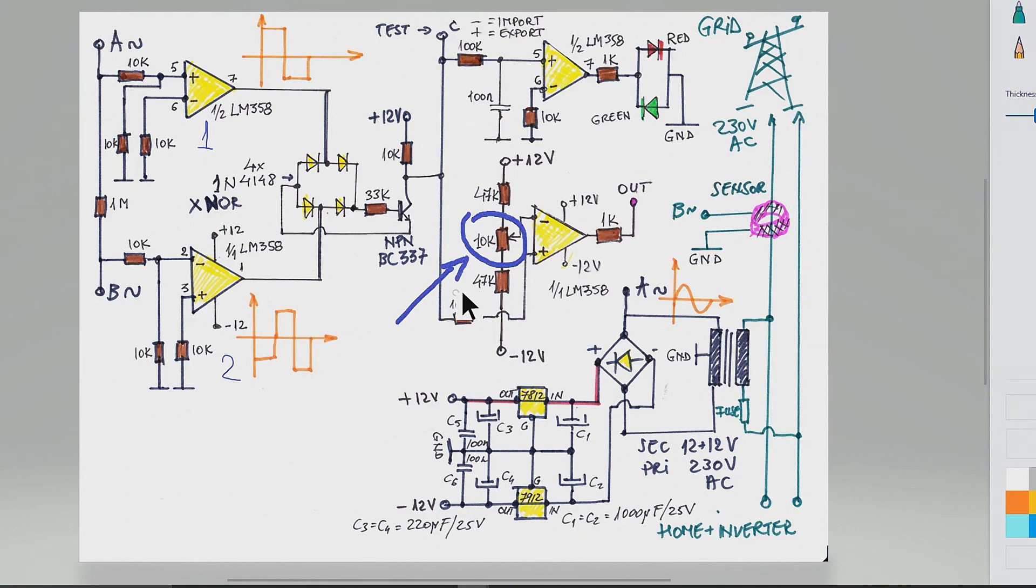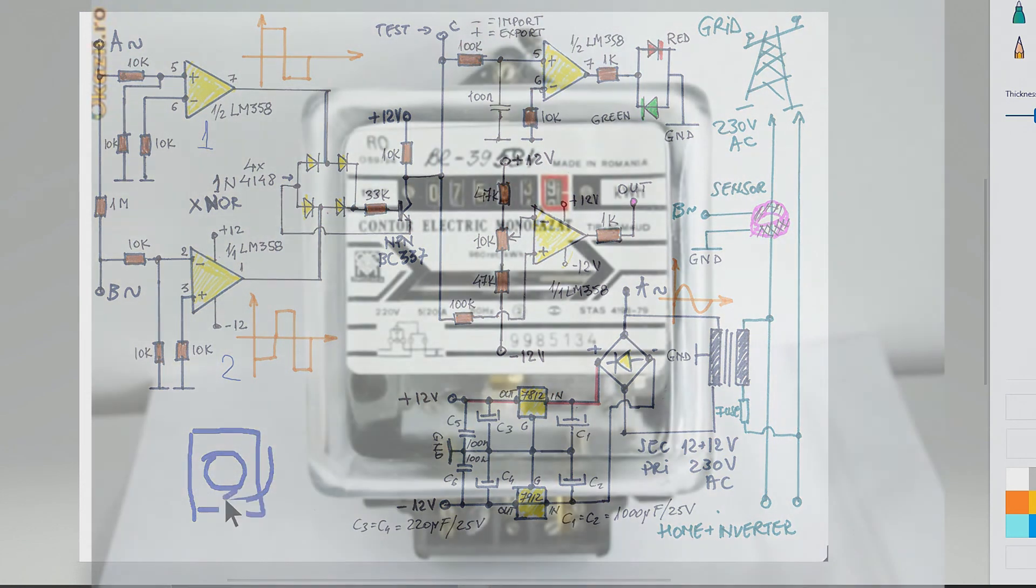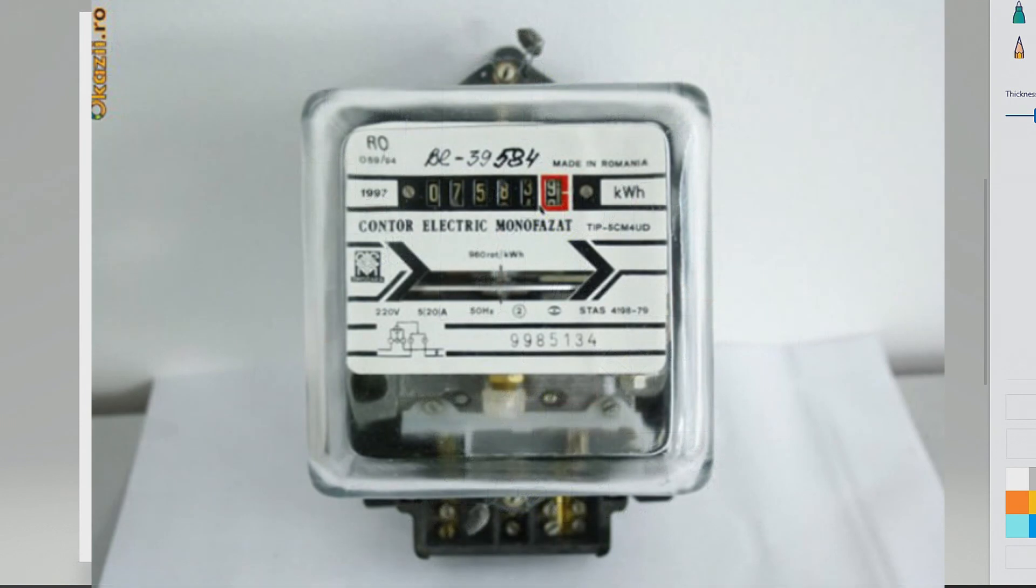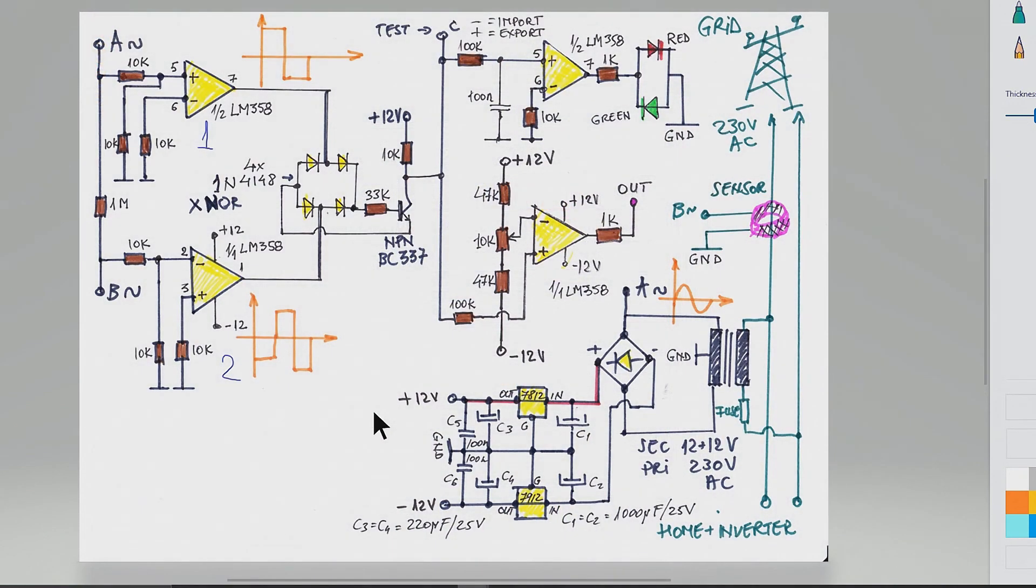The most easy way to find this power level is to have one of those power meters, mechanical power meters. Eventually you can adjust the trimmer to make the power meter wheel going backwards or stop at zero. When it's stopping on zero, then we have the perfect balance.